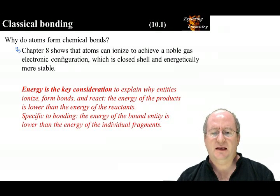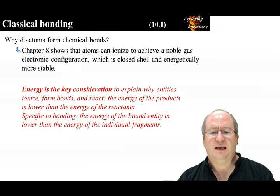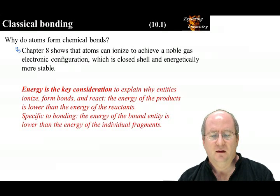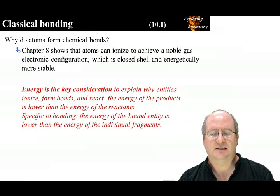In Chapter 8, we looked at reactions in the context of obtaining a stable electronic configuration. Stable electronic configurations is a surrogate to the real determining factor, energy. In a chemistry context, entities ionize, form bonds, and react because the product energy is lower than the reactant energy.